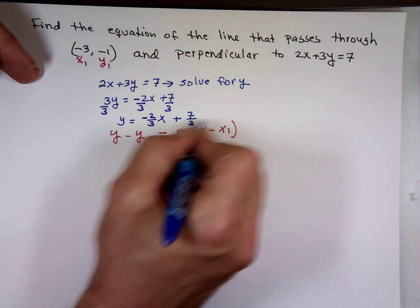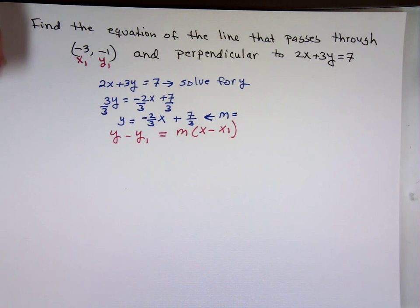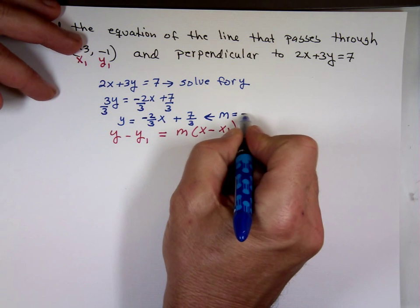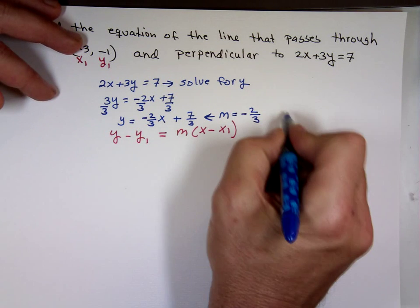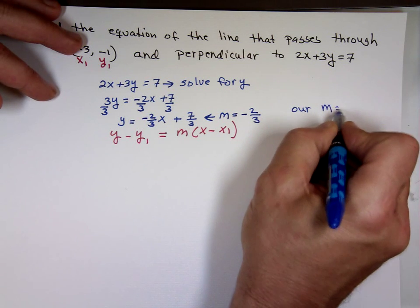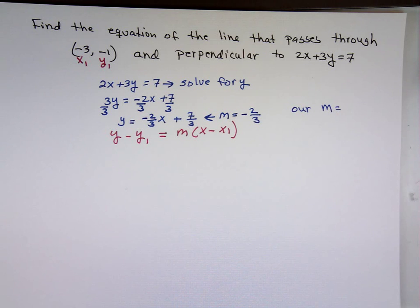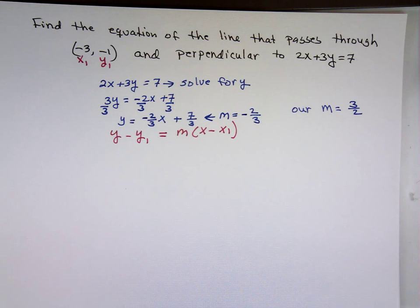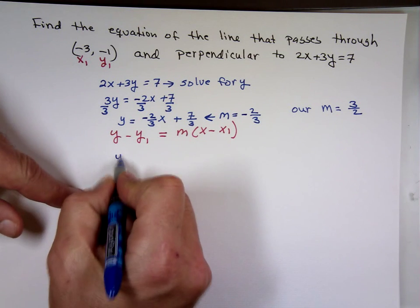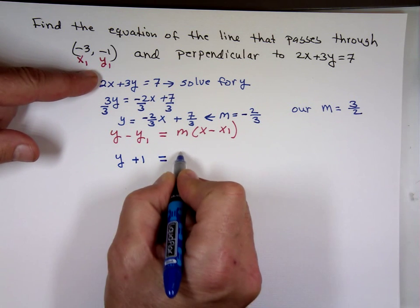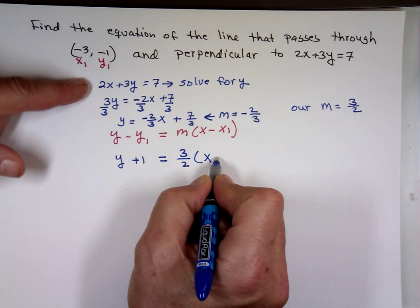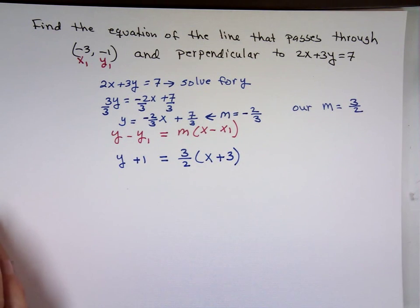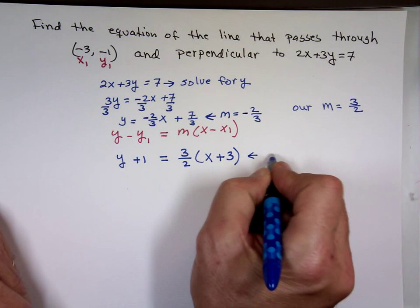The slope of the given line is negative two-thirds. Our line is perpendicular to it, so we flip and change the sign: the perpendicular slope is positive 3 over 2. Now we have all the pieces. Plugging in: y minus negative 1, which is y plus 1, equals 3 over 2 times x minus negative 3, which is x plus 3. That is the point-slope form.